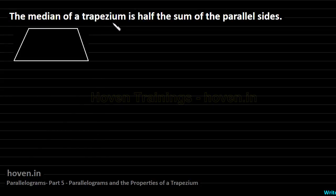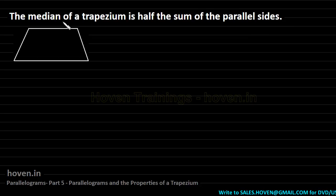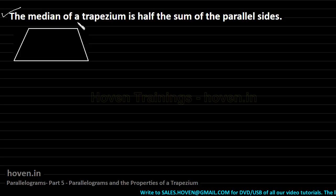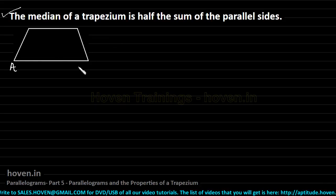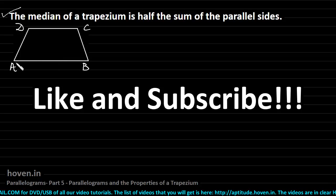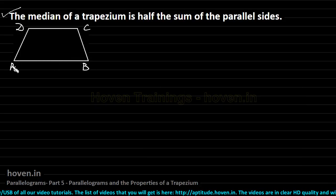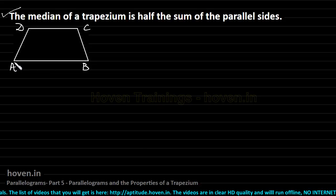The median of a trapezium is half the sum of the parallel sides. This is one fact regarding a trapezium. Let me recapitulate what a trapezium is. In a trapezium, if we mark this quadrilateral as A, B, C and D, then this quadrilateral is a trapezium if one pair of opposite sides is parallel to each other.